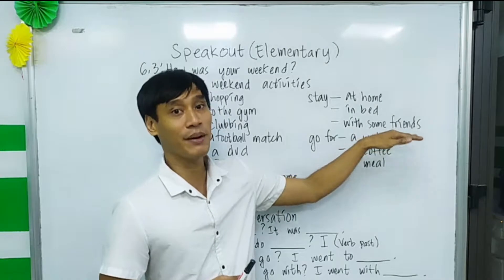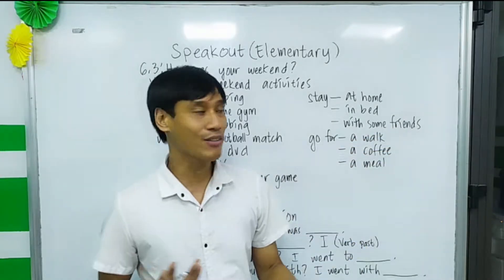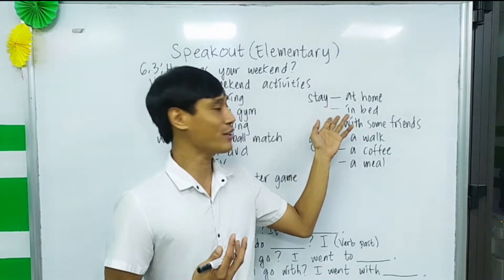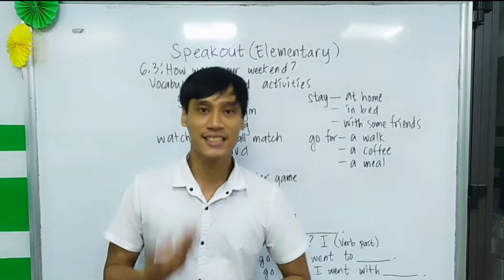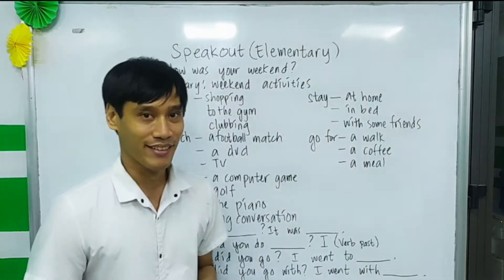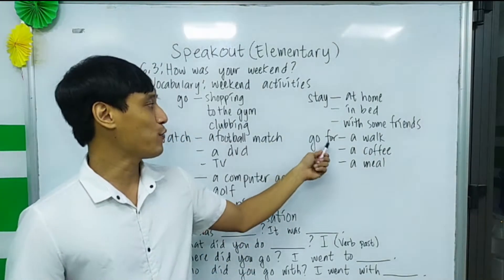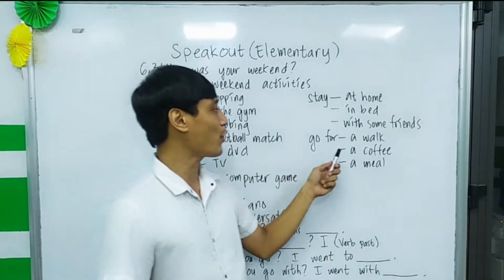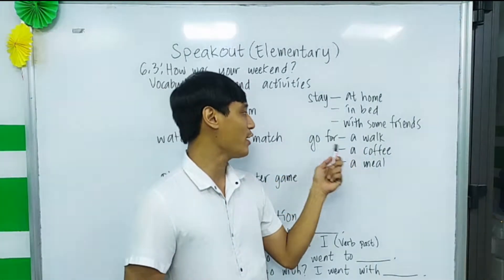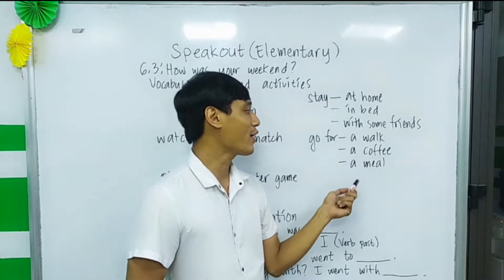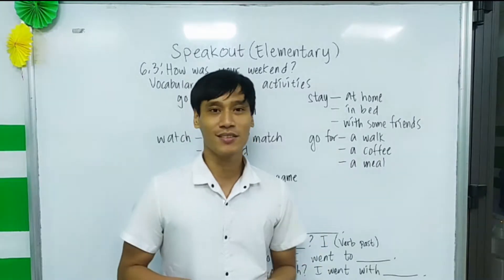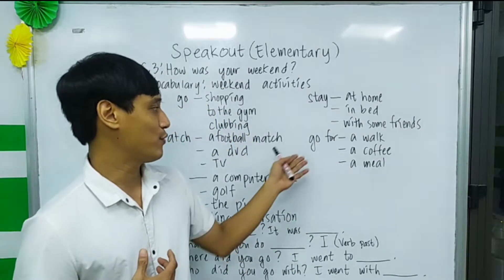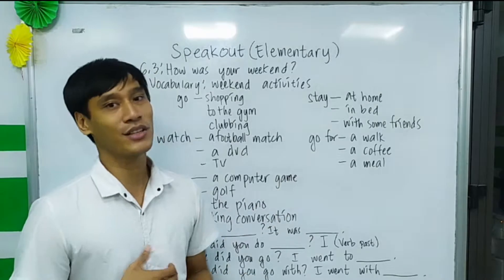If you're with somebody, you can say 'hang out with friends.' If you're alone, you can just say 'stay.' Next is 'go for' — go for a walk, go for a coffee, go for a meal. You can also use 'have': have a coffee, have a meal.